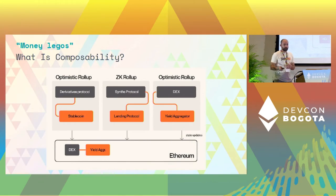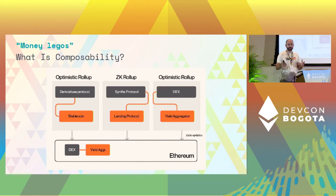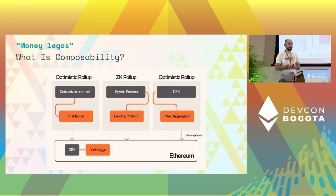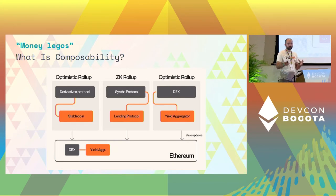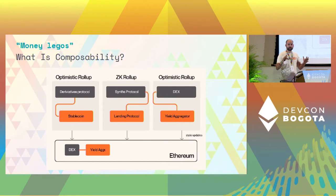So what is composability? In other words, it's the money Legos — it's what fueled Ethereum's growth all these years. As we can see on L1, a yield aggregator can use a DEX, or a lending protocol can use a stablecoin protocol and build on top. L1 has rich composability, and these optimistic or ZK rollups also have composability inside them, but not across them.